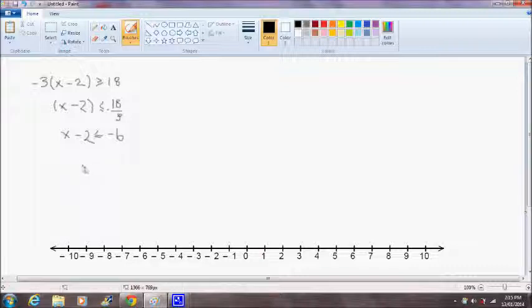And then it's a matter of just getting x by itself. We do that by adding 2 to both sides of the equation, so we end up with x is less than or equal to negative 4.